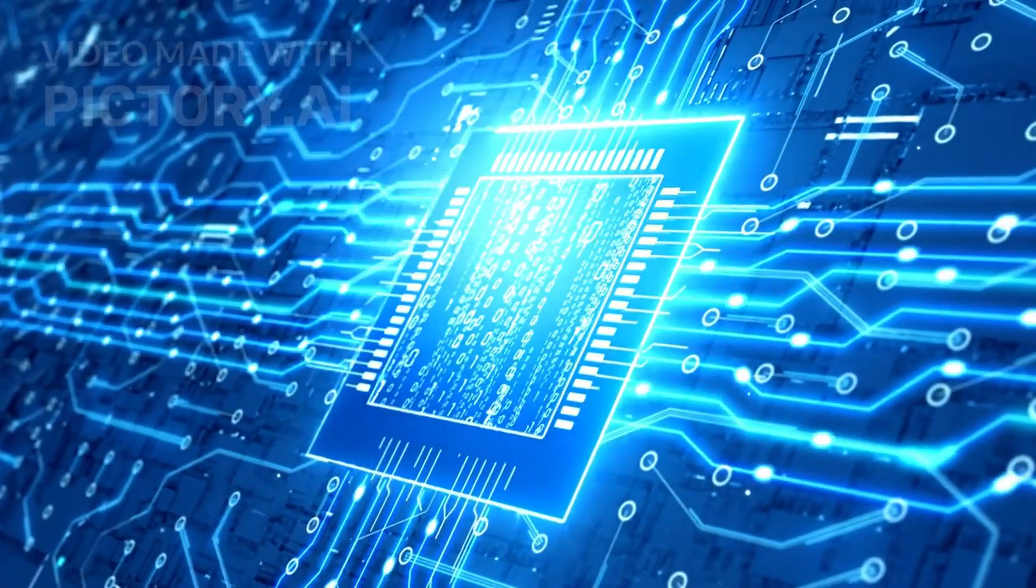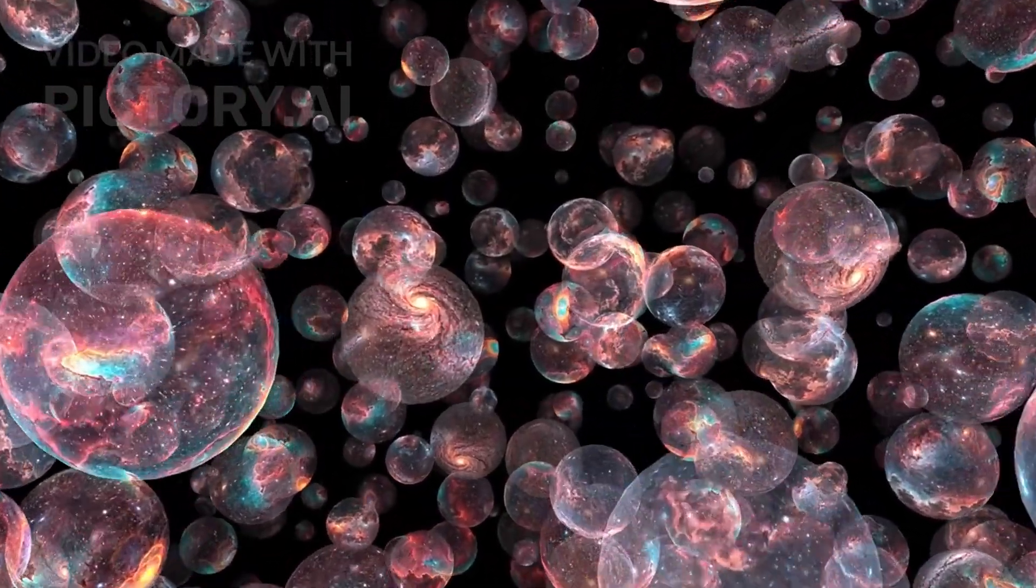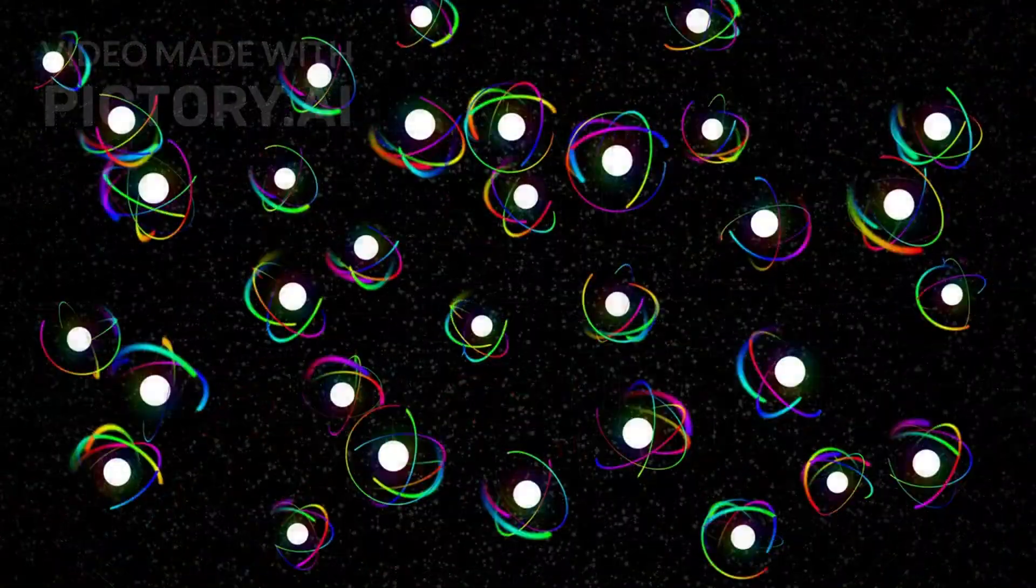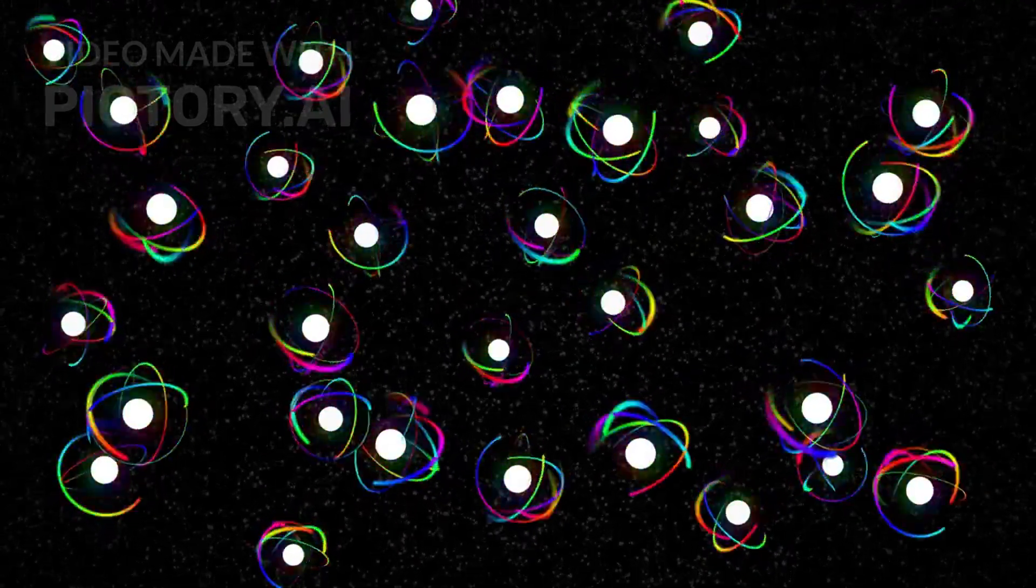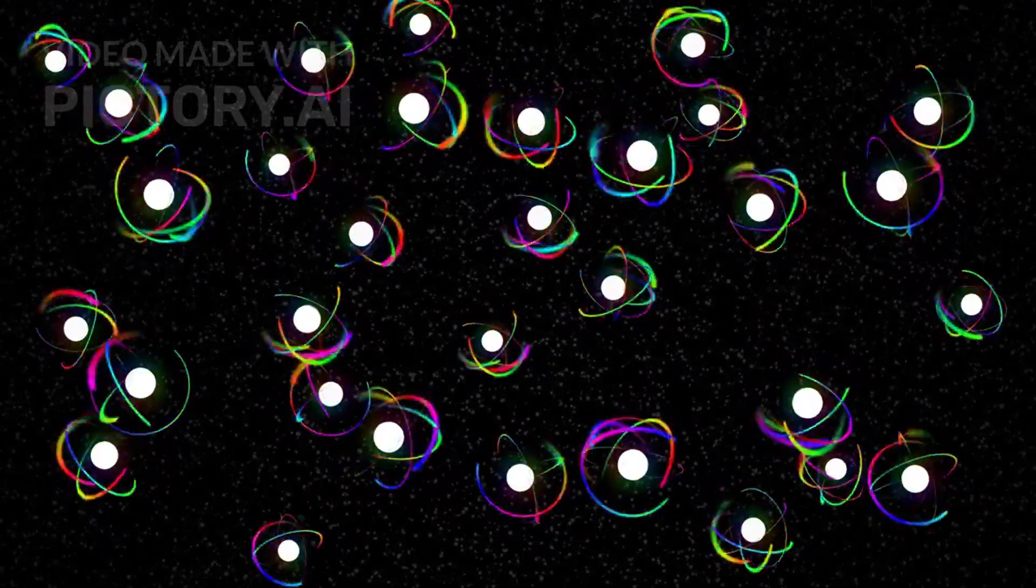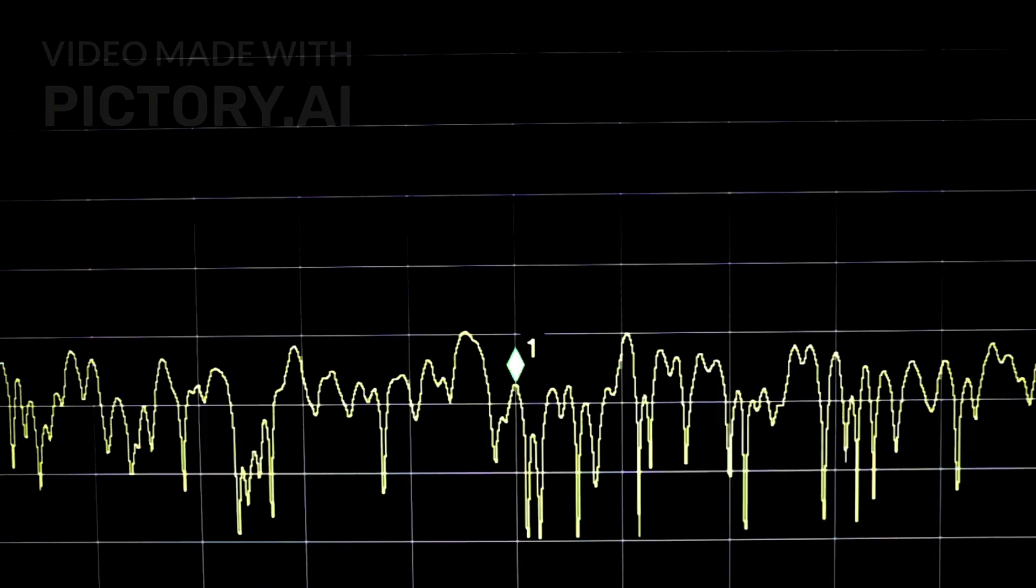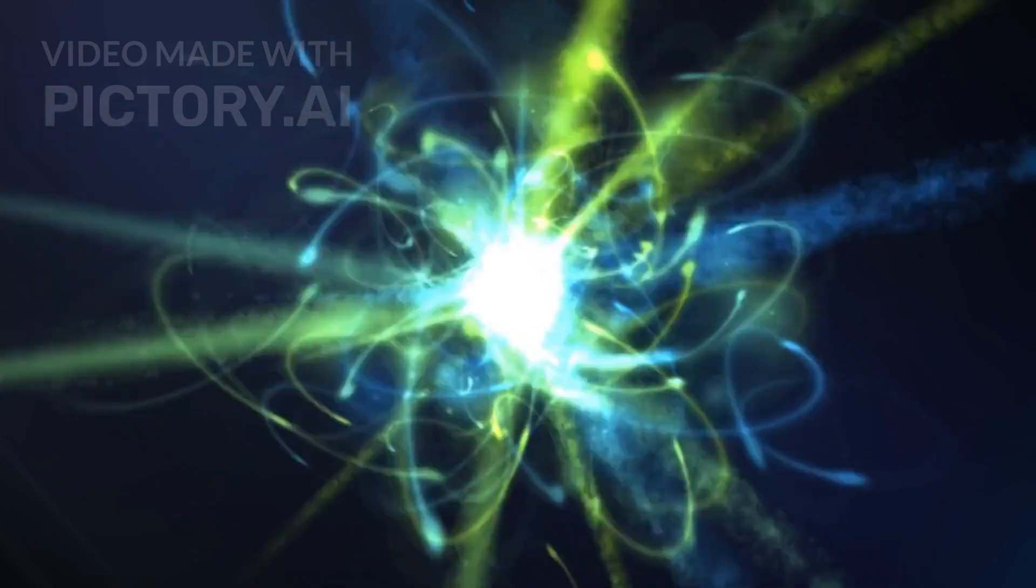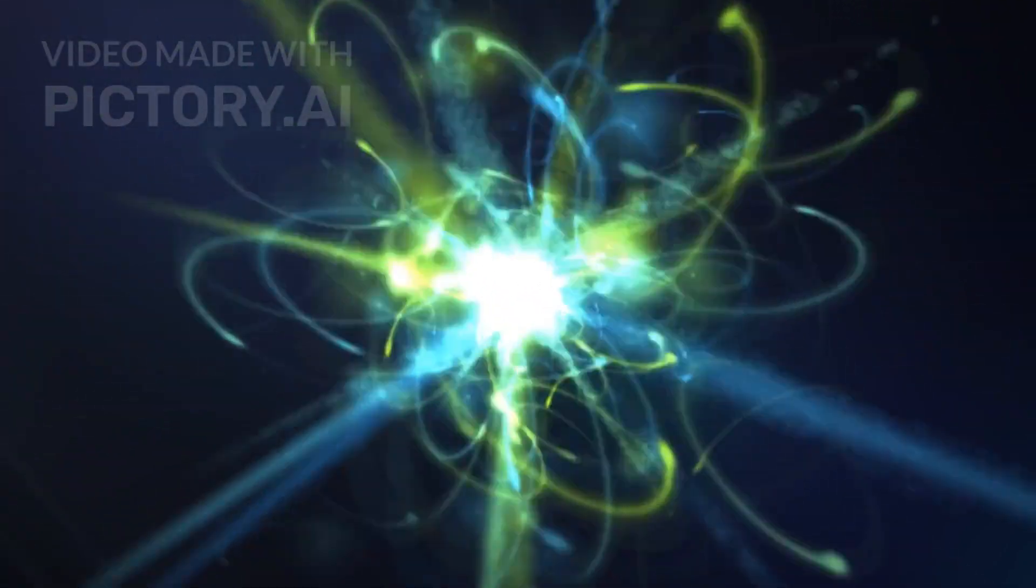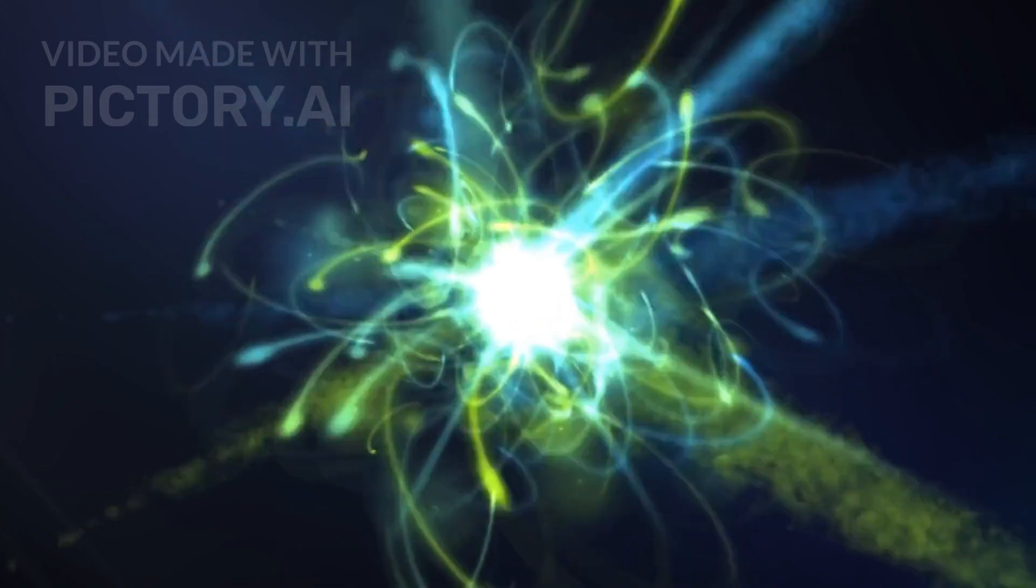Quantum sensors don't drift. They don't guess. They read the universe directly. Take a quantum accelerometer. Instead of measuring movement with spinning masses or lasers bouncing between mirrors, it tracks how ultra-cold atoms fall, literally falling under the pull of gravity. According to quantum theory, every atom behaves like a wave. And as that wave moves through space and time, it interferes with itself in measurable ways. By observing the interference pattern of these atom waves, scientists can detect motion, acceleration, or changes in gravity with astonishing accuracy, down to a fraction of a billionth of a g.